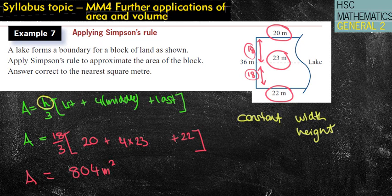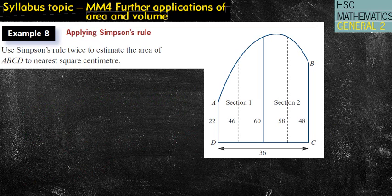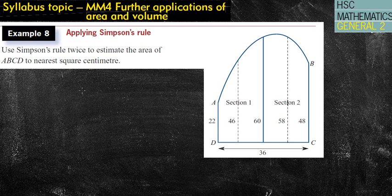They can give you more challenging problems. Sometimes we do more than one application of Simpson's Rule. Example 8: use Simpson's Rule twice to estimate the area of ABCD to the nearest square centimeter. We're going to do it two different ways — the way it's asked for, which is twice, and then I'll show you how you could do it once, and show you the difference.